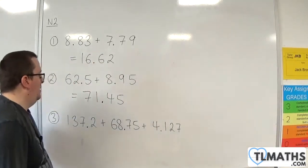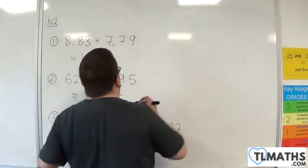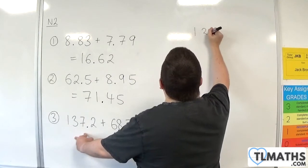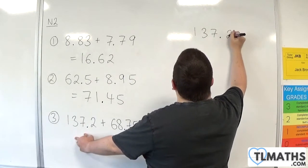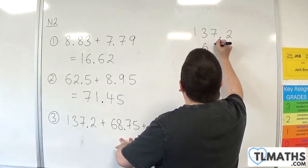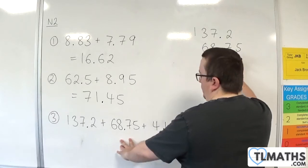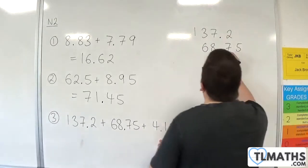Okay, so for our last example, we've got three numbers with decimals here. We've got 137.2. We've got 68.75. Make sure the decimal points line up. And then 4.127.